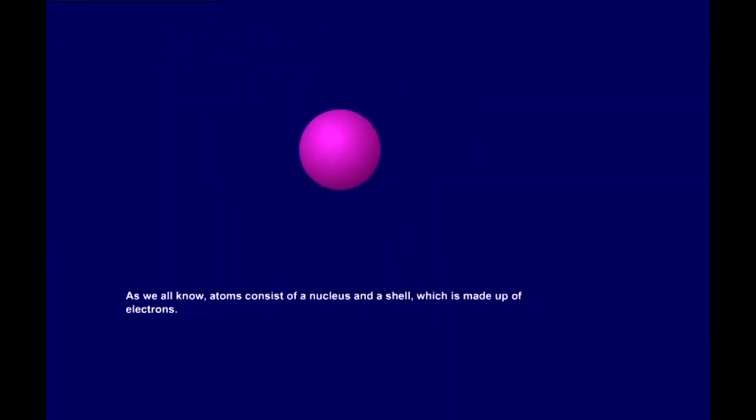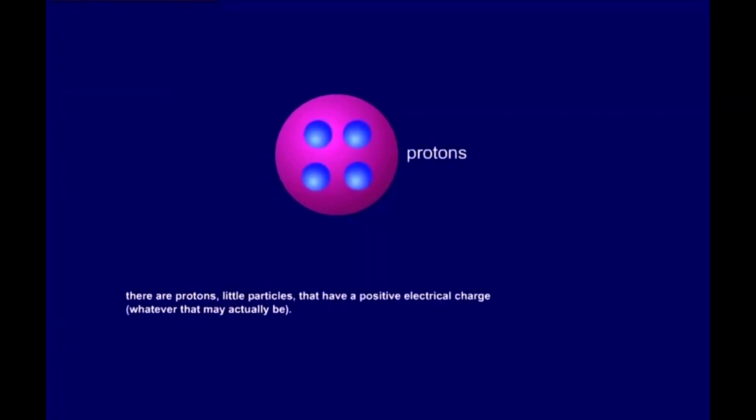As we all know, atoms consist of a nucleus and a shell, which is made up of electrons. In the nucleus, besides other things, there are protons, little particles that have a positive electrical charge, whatever that may actually be.